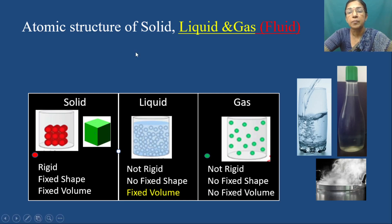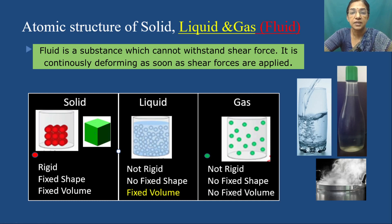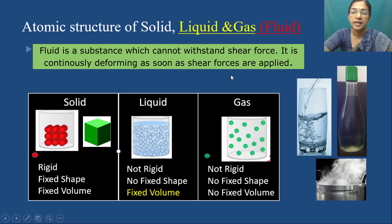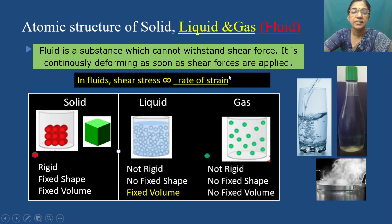To conclude the properties of fluid: fluid is a substance which is capable of flowing, it cannot withstand shear forces, and it continuously deforms as soon as shear forces are applied. In fluids, shear stress is proportional to rate of strain.